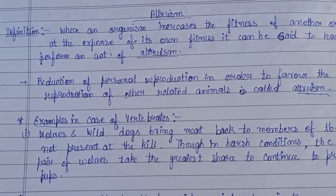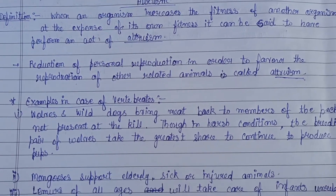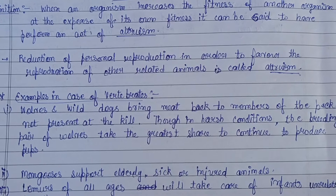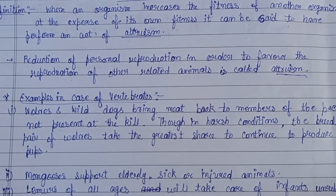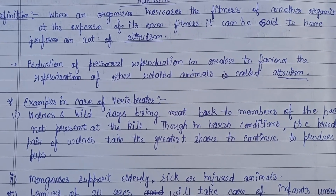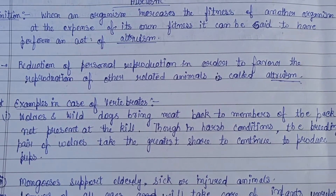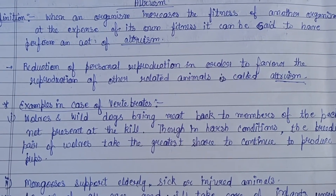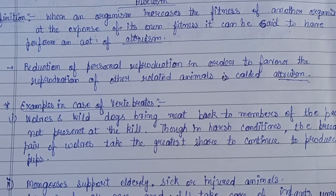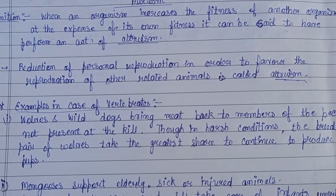There are various examples in animals — both vertebrates and invertebrates. First, wolves and wild dogs bring meat back to members of the pack not present at the kill. In harsh conditions, the breeding pair of wolves take the greatest share to continue producing pups, so that breeding chances are maintained in the group.